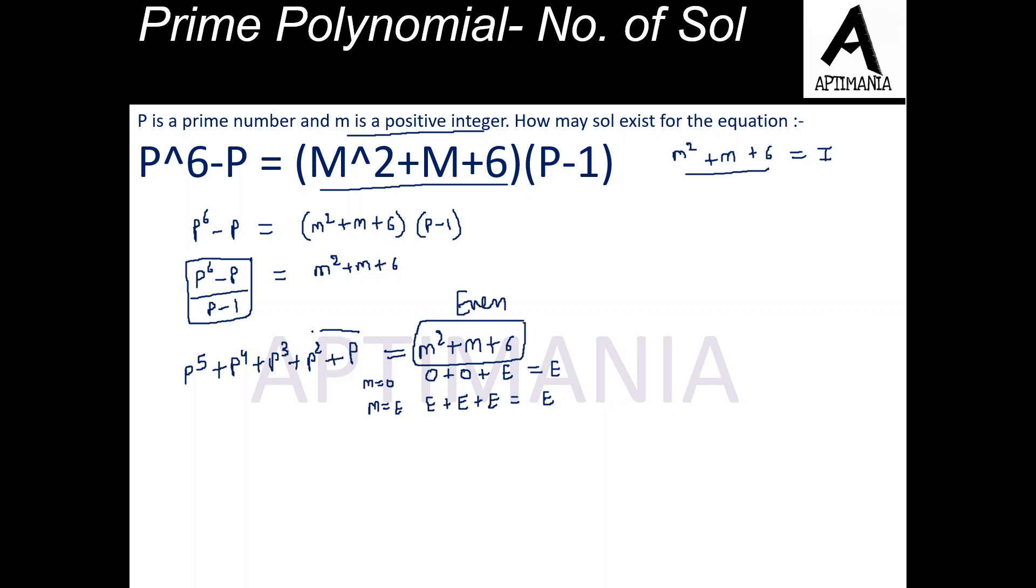So we can say that this summation must also be something which is an even number. Now P is a prime number and we have all the prime numbers as odd. Only 2 is the exception. Only 2 is the prime number which is even.